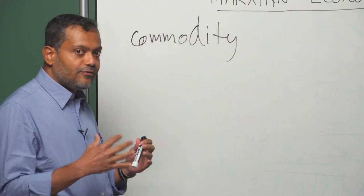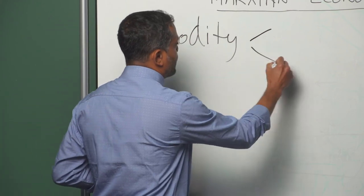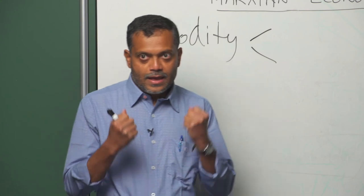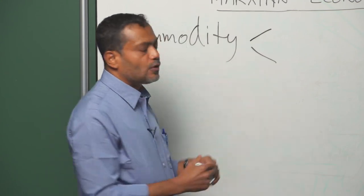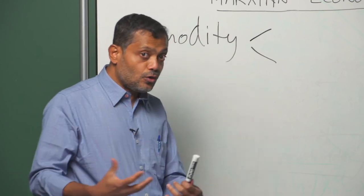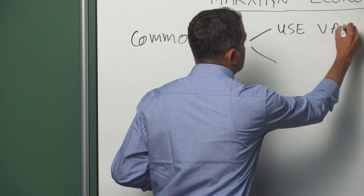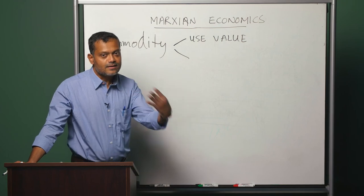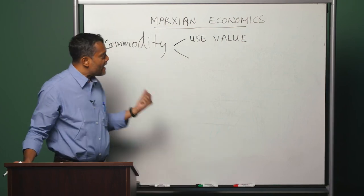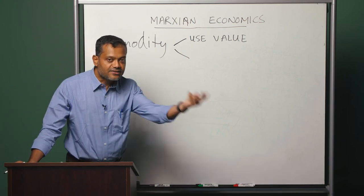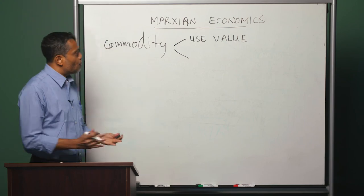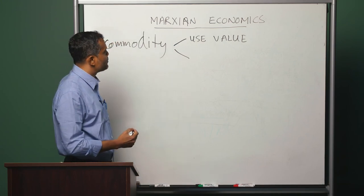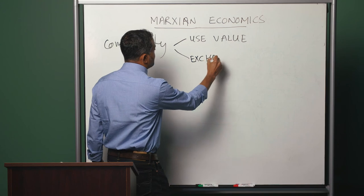A commodity, if we think about it, will have two important aspects. One aspect of the commodity is that it is useful — useful to somebody. The aspect of the commodity whereby it is useful to somebody is known as use value. But that is just one aspect of the commodity. There is another aspect: that the commodity can be exchanged with other commodities. The aspect of exchangeability of commodities whereby one commodity can be exchanged with any other is called by Marx as exchange value.